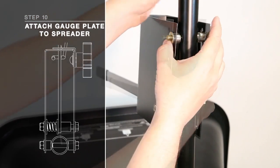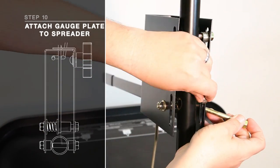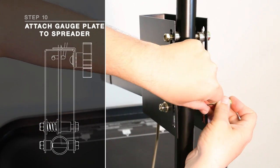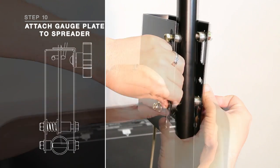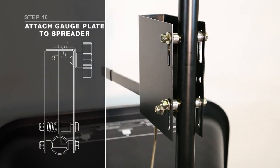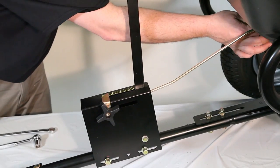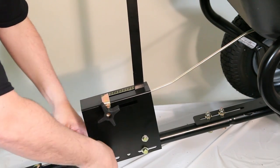Then hand turn a hex nut number 15, but do not tighten. Repeat the steps on the other end of the gauge plate. After assembling the gauge plate to the toe tube, calibrate the gauge plate by pushing the gate all the way forward, then finally tighten the hex nuts located on the gauge plate.